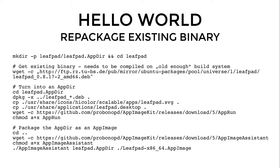Then I copy the icon and the desktop file into the root directory of the AppDir, and then get the AppRun file from AppImageKit. AppRun is the main entry point into the AppDir — it essentially does all the magic of launching the application.